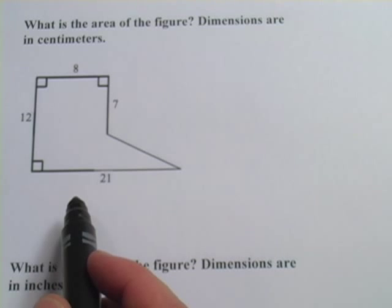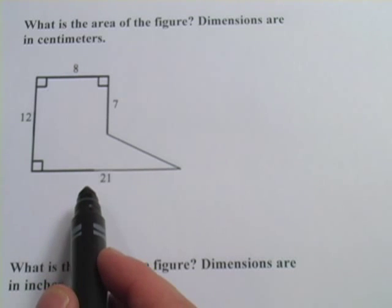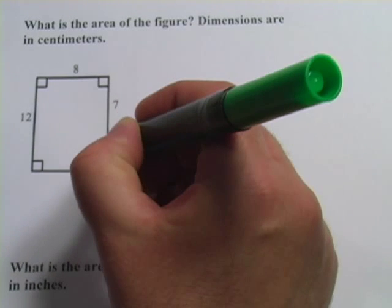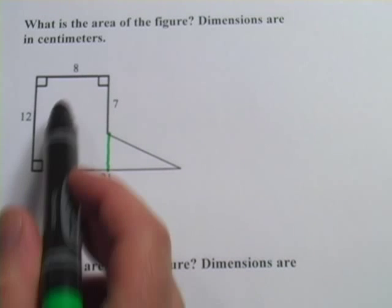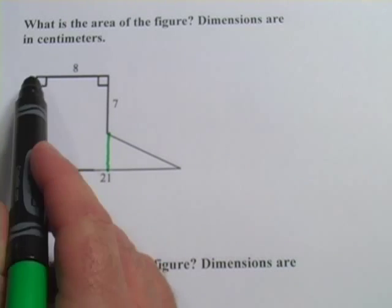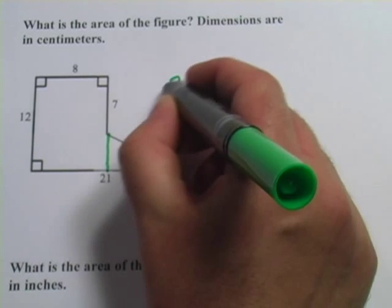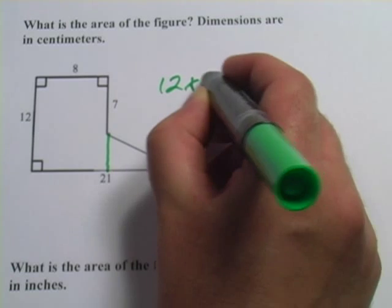In this one, I think it's pretty obvious we're going to have a rectangle and a triangle, and we can just cut it right there. The only trick is to make sure we have all our dimensions. The rectangle part's pretty easy. It's 8 by 12, so that's part of this, 12 times 8, plus our triangle.